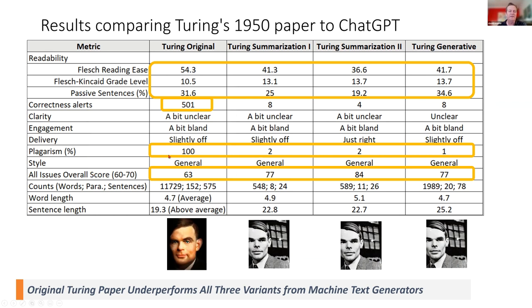Another interesting row: Turing's original is, as you would hope, flagged as 100% plagiarized — we did feed the original paper as text into the metric. The interesting part is all of the machine-generated ones are 99 to 98% original. That's a little bit new and not something you would expect to come out of, for example, copy-clipping a Wikipedia article.